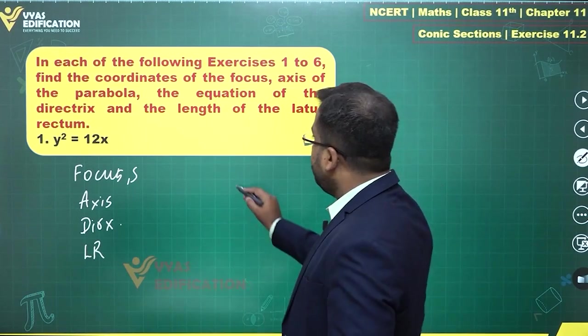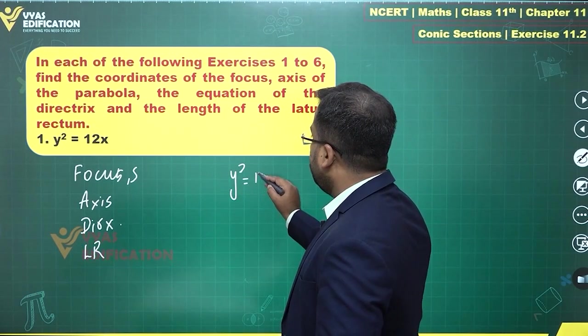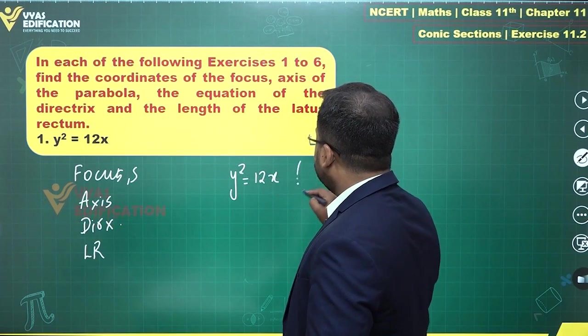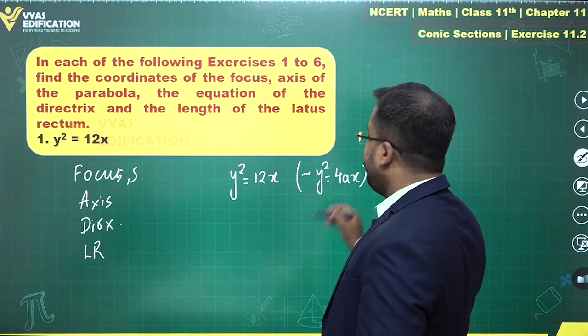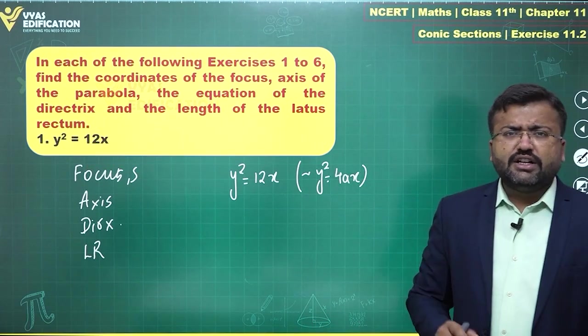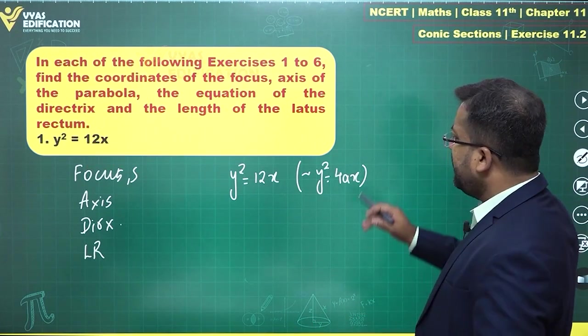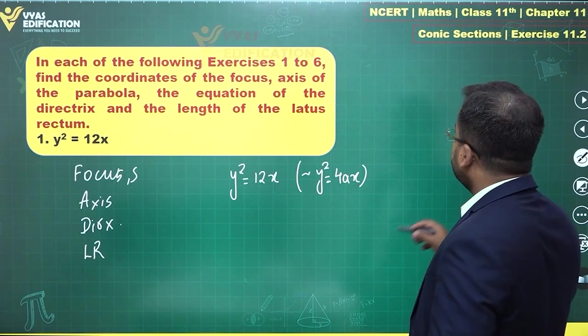Now, Y² = 12x is similar to Y² = 4ax and we should be aware of all the terms related to this Y² = 4ax with the help of this diagram of Y² = 4ax.